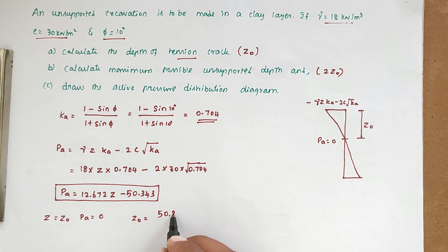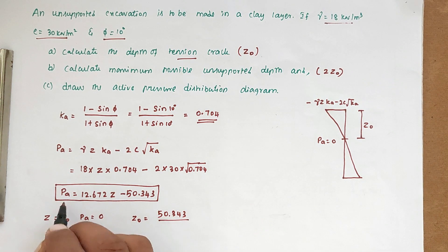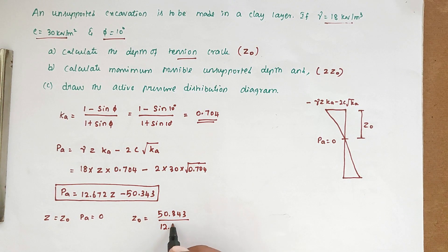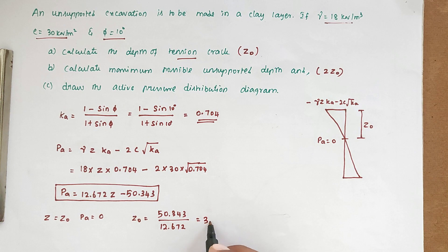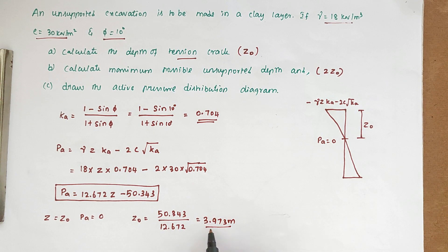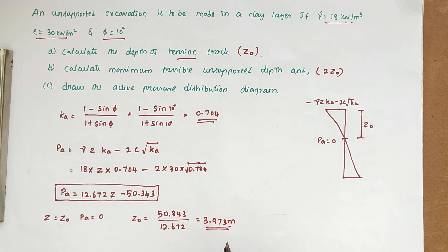Rearranging the equation, z-naught = 50.343 / 12.672. Solving this, we get z-naught equal to 3.973 meters. This is the answer to the first question — the depth of tension crack is 3.973 meters.